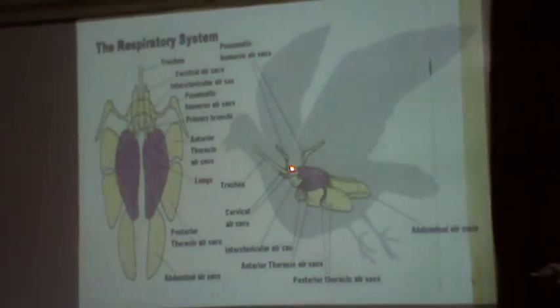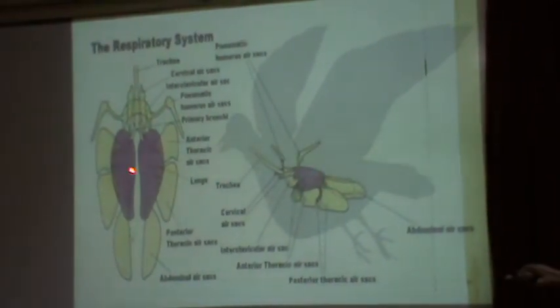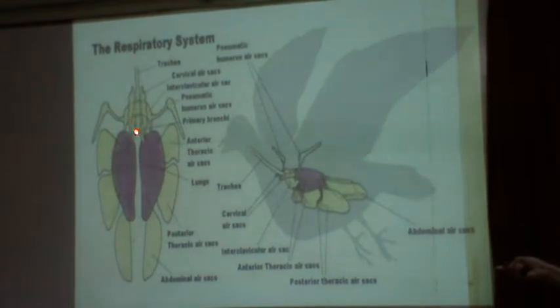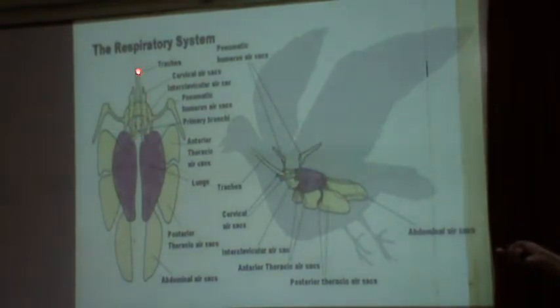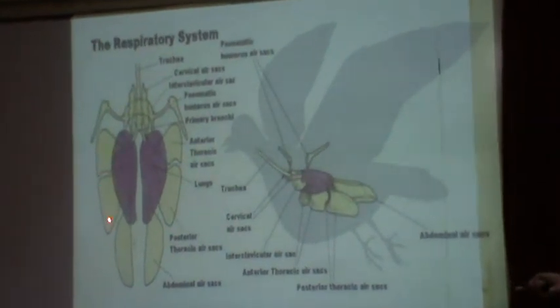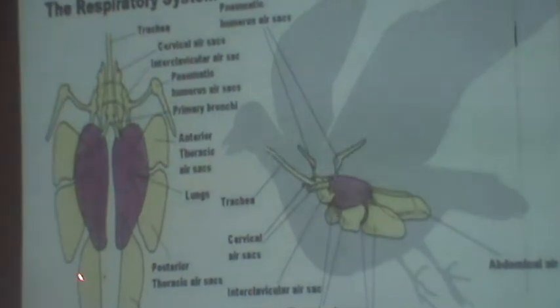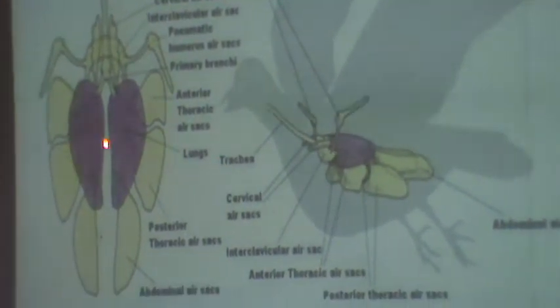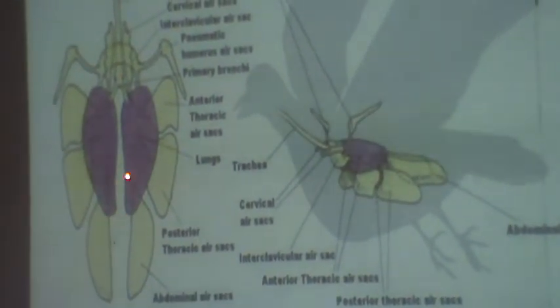In the respiratory system, there are two lungs connected via two bronchi and the trachea. These lungs are connected to the air bladders. Air bladders plus lungs provide fresh air to the birds, because the metabolic rate in birds is high and oxygen demand is also high. The lungs and air bladders together supply a high amount of oxygen.